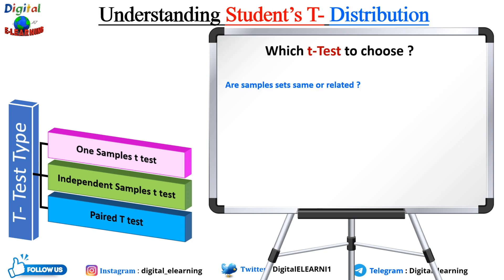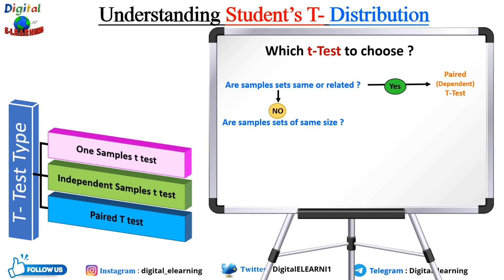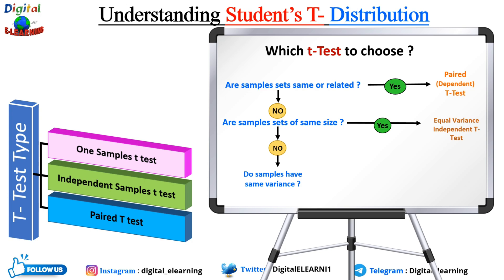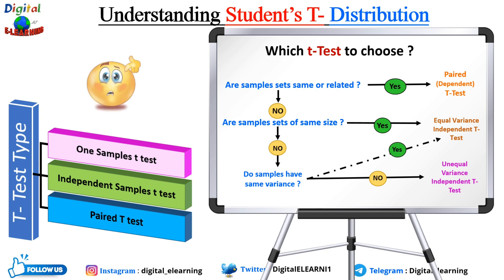To decide which test to use: first, if your samples are from the same set or are related to each other, use the paired t-test. If not, ask whether the sample sets are of the same size — if yes, use the equal variance independent t-test. If no, ask whether the samples have the same variance — if yes, use the equal variance independent t-test; if no, use the unequal variance independent t-test.